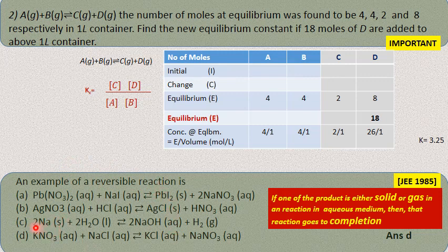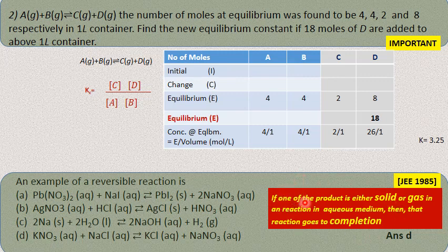The last option: potassium nitrate reacts with sodium chloride, both in aqueous phase, giving potassium chloride solution and sodium nitrate solution. All species are in aqueous media and remain in equilibrium with one another — the reaction does not go to completion. Therefore D is the answer for the reversible reaction. The clue is: if one product in an aqueous system is solid or gas, the reaction goes to completion.